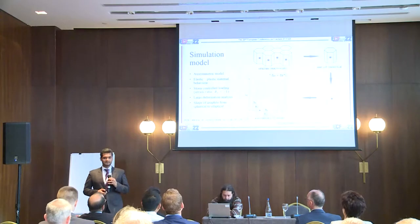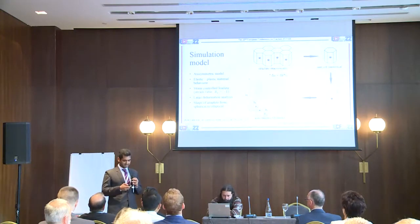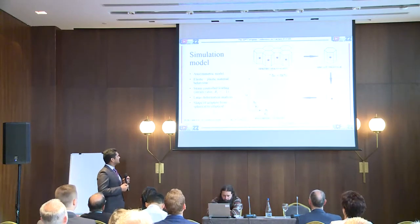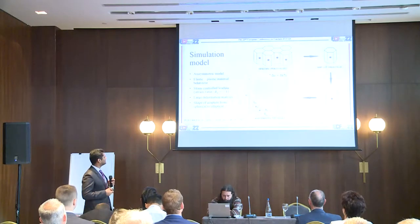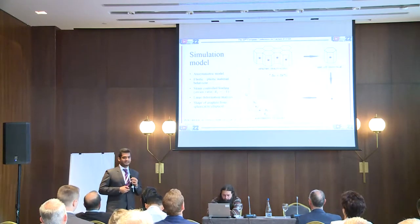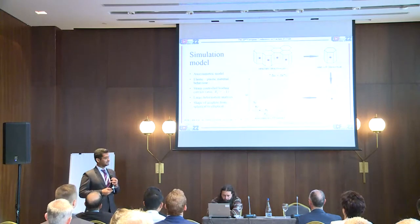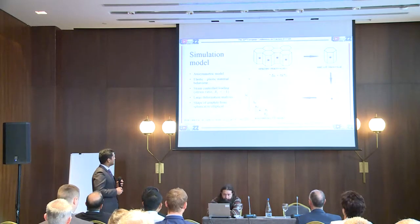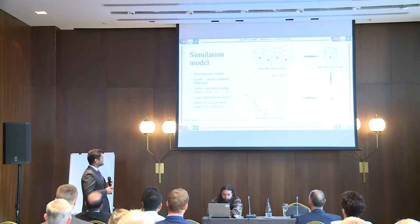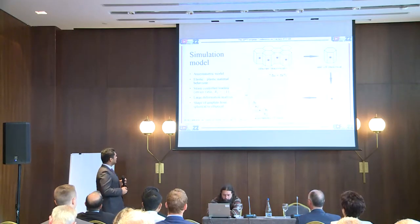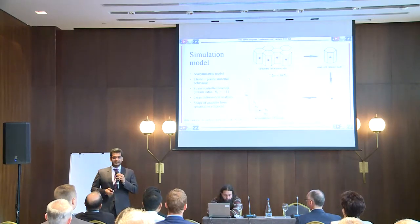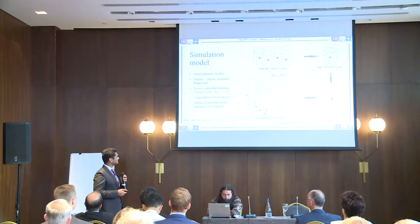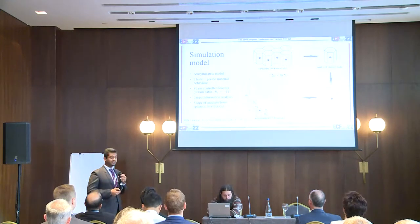To perform simulations, we need a simulation model. An axisymmetric model has been created, where this represents the matrix of the material. Initially, we have considered the graphite as a void, which is very common practice for modeling nodular cast iron. The shape of the graphite particle has been considered as both sphere and elliptical. Large deformation analysis in Abaqus has been carried out because in low-cycle fatigue, high plastic strain accumulation happens. This model is subjected to strain-controlled loading.